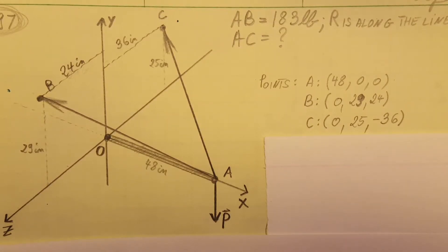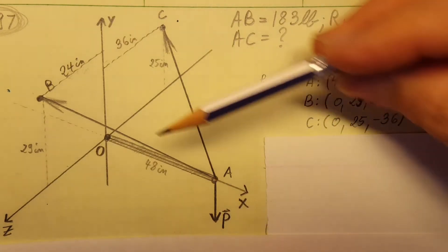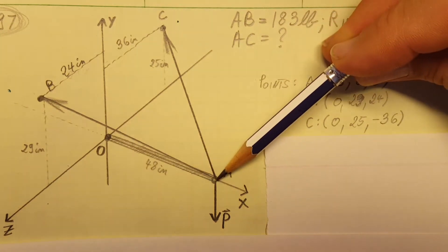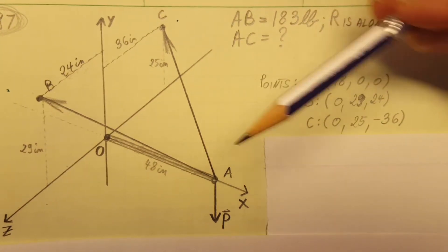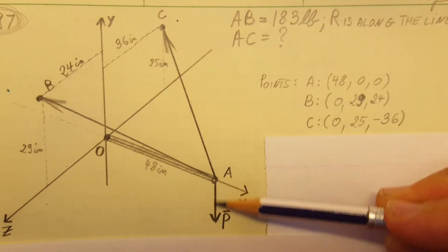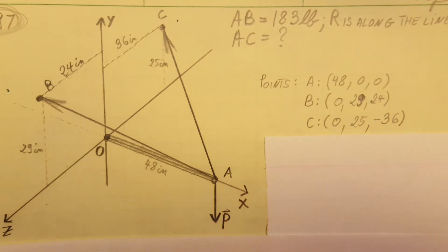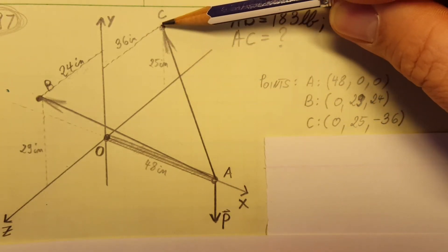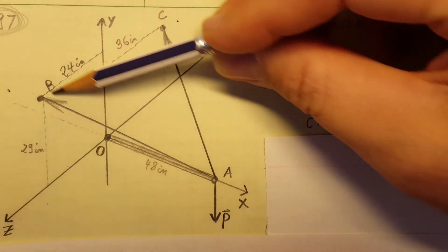Okay, we're gonna work with 3D vectors. The problem says that we have a boom from O to A that carries a load P right here and is supported by two cables, as shown right here from A to C and from A to B.